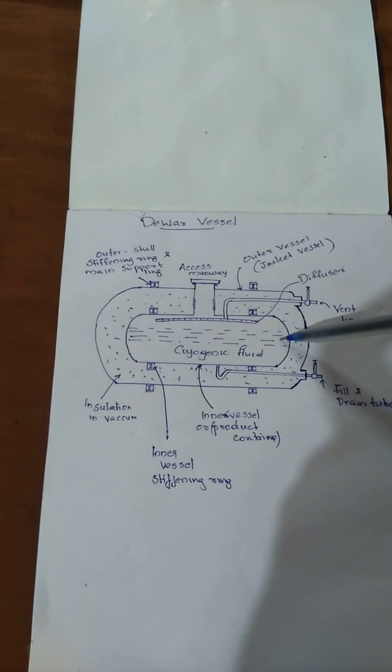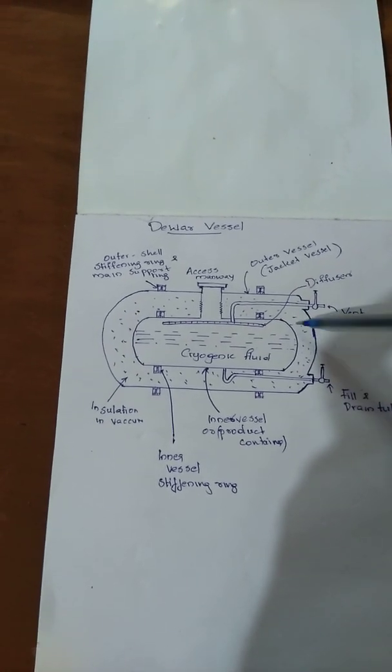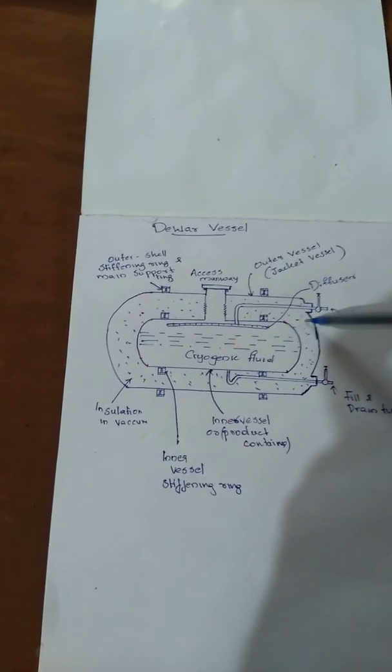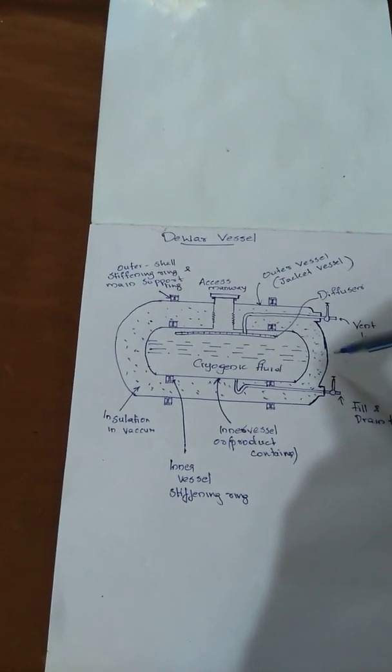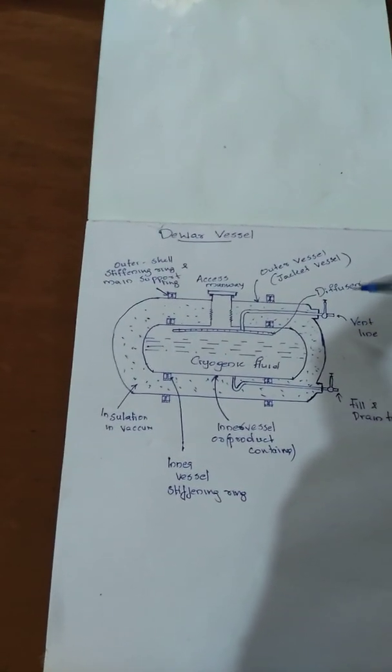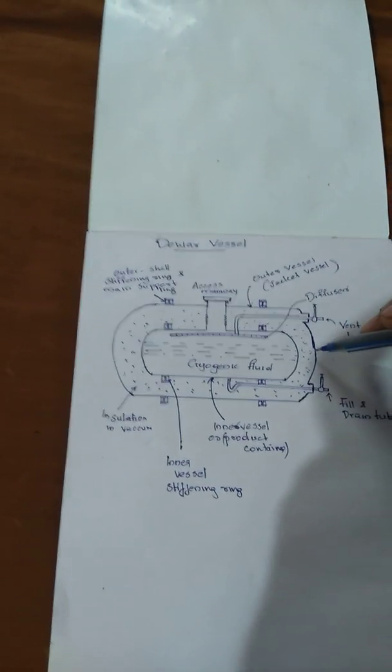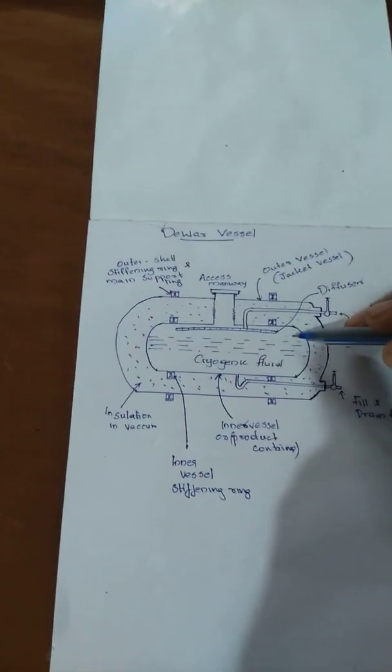The space between the inner vessel and outer vessel is filled with powder type insulations. These insulations are provided to prevent heat transfer from the outer vessel to the inner vessel.